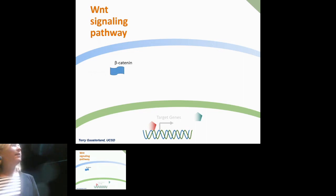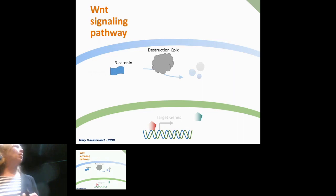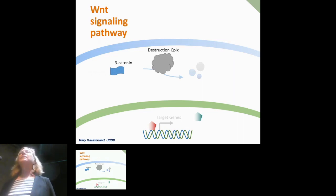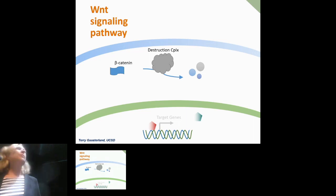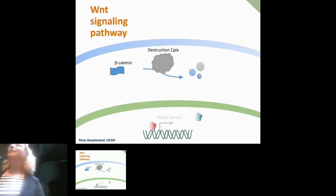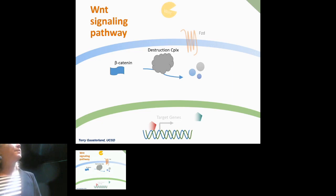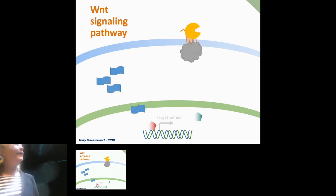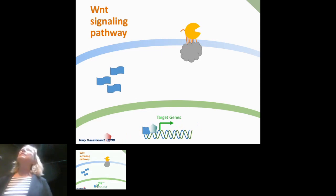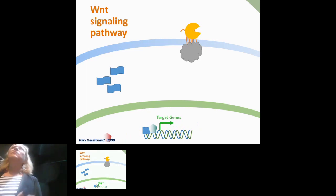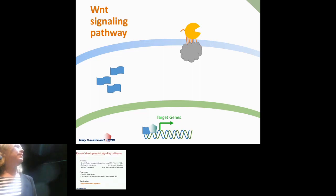There's a destruction complex — a whole bunch of proteins — at work inside the cell all the time, monitoring beta-catenin and keeping it from accumulating. When Wnt comes along and binds frizzled, it recruits the LRP and the destruction complex, allowing beta-catenin to build up. Enough beta-catenin crosses into the nucleus, binds DNA, and acts as a transcription factor, turning on genes. That's the fundamental mechanism of Wnt signaling.